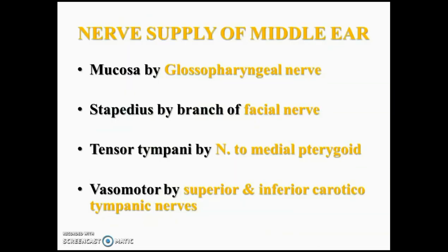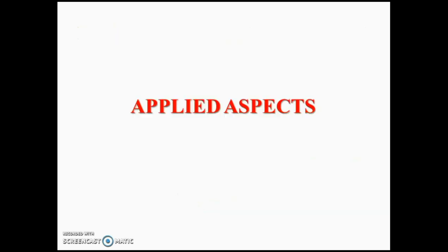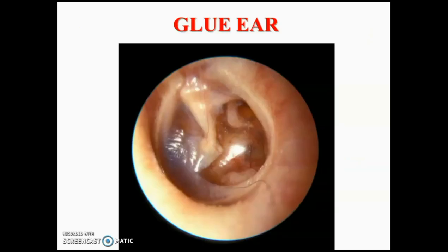Coming to the nerve supply: the mucosa is innervated by the glossopharyngeal nerve via the tympanic plexus, the stapedius is supplied by the branch of the facial nerve, tensor tympani by the nerve to medial pterygoid as it is derived from the first arch, and vasomotor fibres from the superior and inferior caroticotympanic nerves.